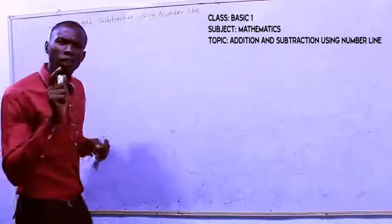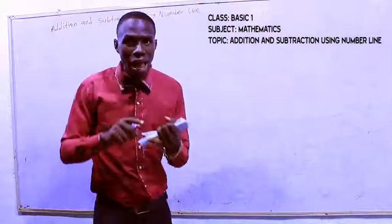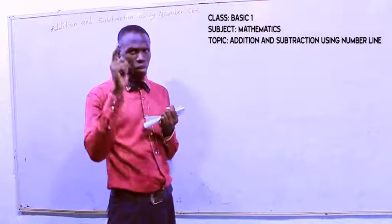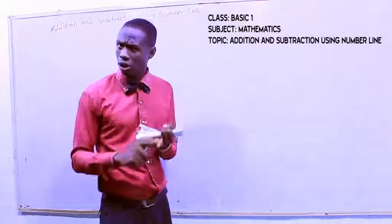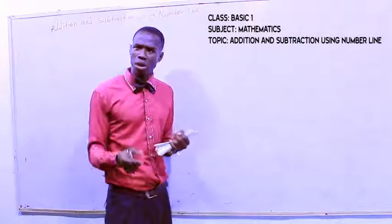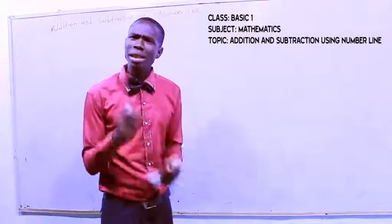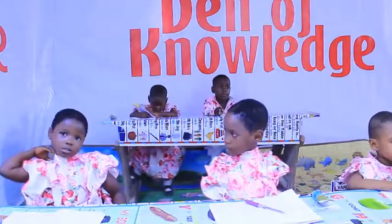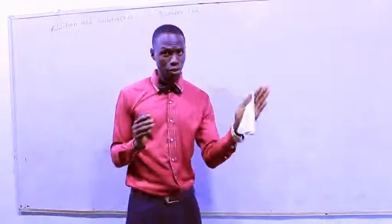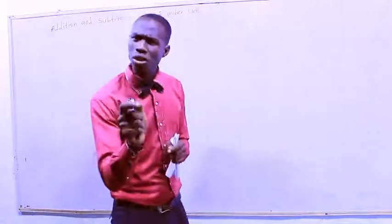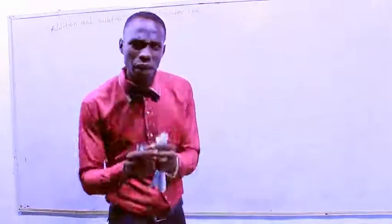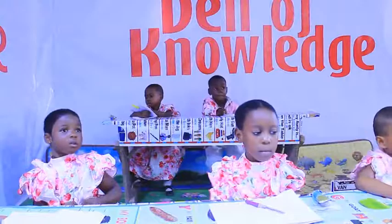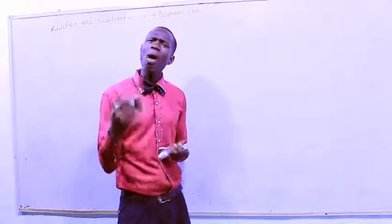On our previous topics, we talked about addition and subtraction. The previous topic was addition and the next one was subtraction. Now, what is addition? Addition is joining two or more numbers together. What is subtraction? Subtraction is taking away a small number from a bigger number.